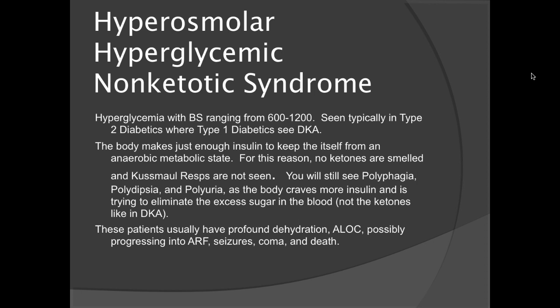With HHNS, you will still have excessive drinking and excessive output. These patients usually have profound dehydration and an altered level of consciousness. They can progress into acute renal failure, seizures, coma, and death — this happens usually pretty quickly when they hit this state, so you have to be right on top of it.